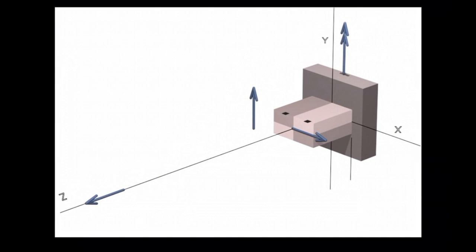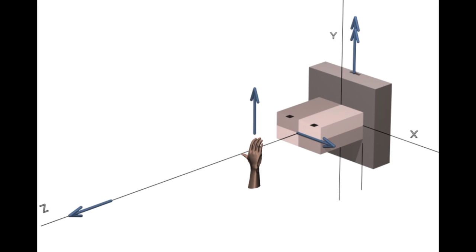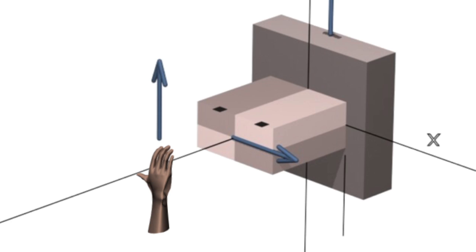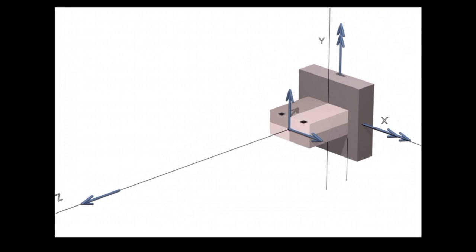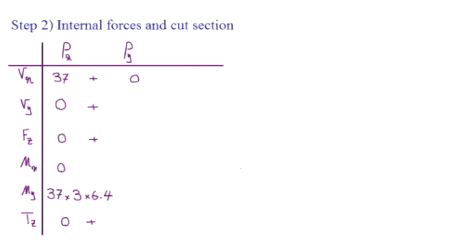Now let me talk about the second force, Py. There would be two moves again. Moving along its axis doesn't cause any moment, and moving perpendicular to that axis causes a moment. Using the right-hand rule — fingers toward Py, curl toward the cut section — that shows the moment about the x-axis, which is negative here. Once it arrives to that point, it would be a shear force along the y-axis. So Py causes zero shear along x, 23 kips along y, no axial force, and moment about x is negative 23 times A, or 6.4 inches.